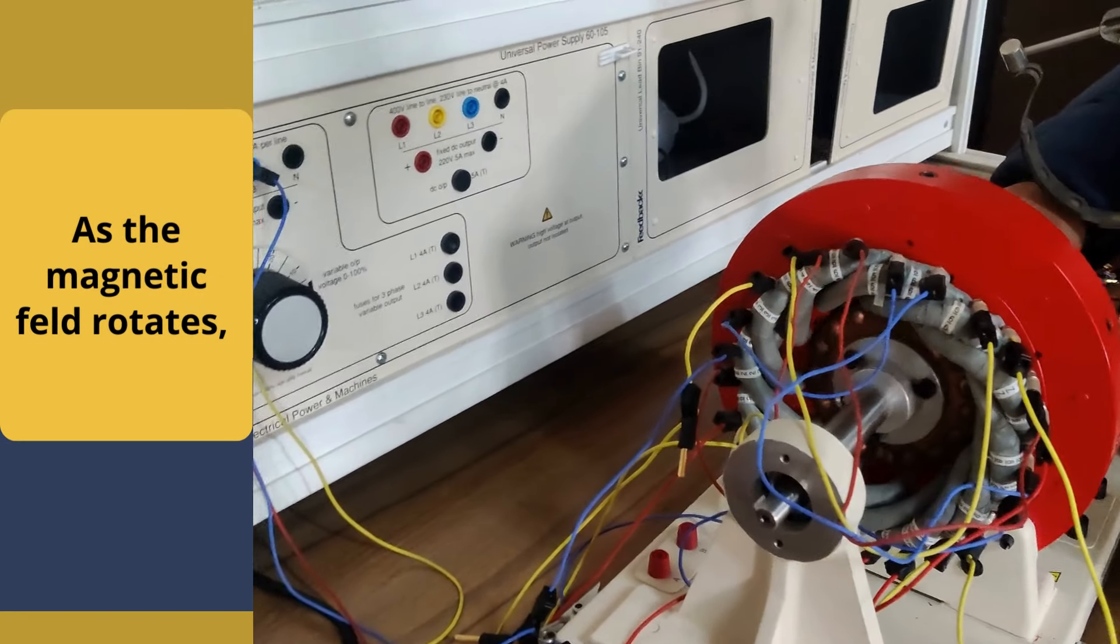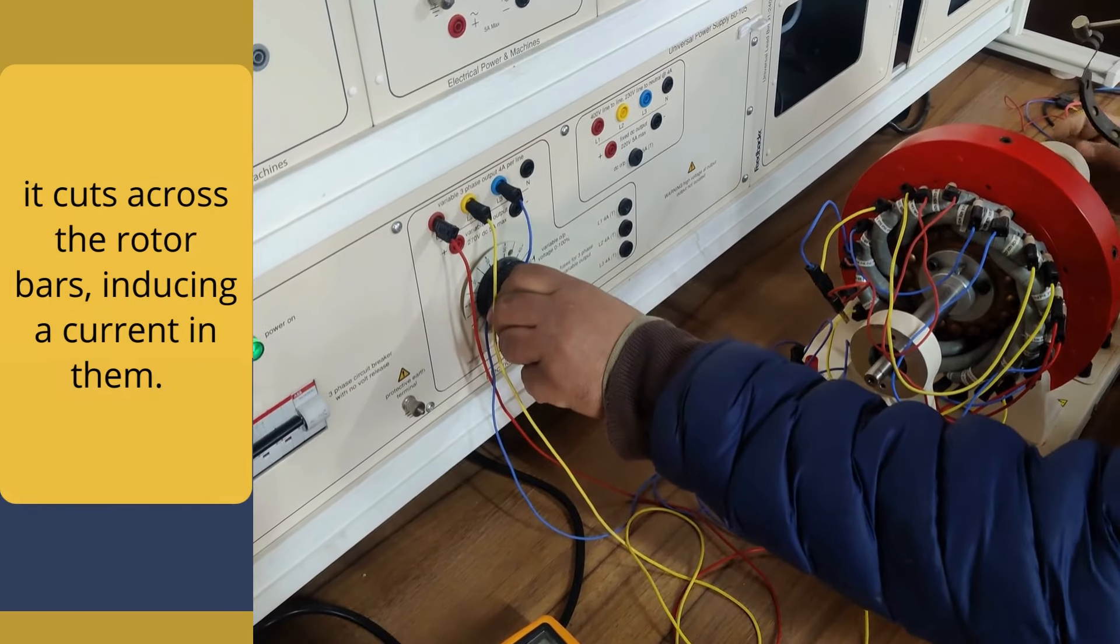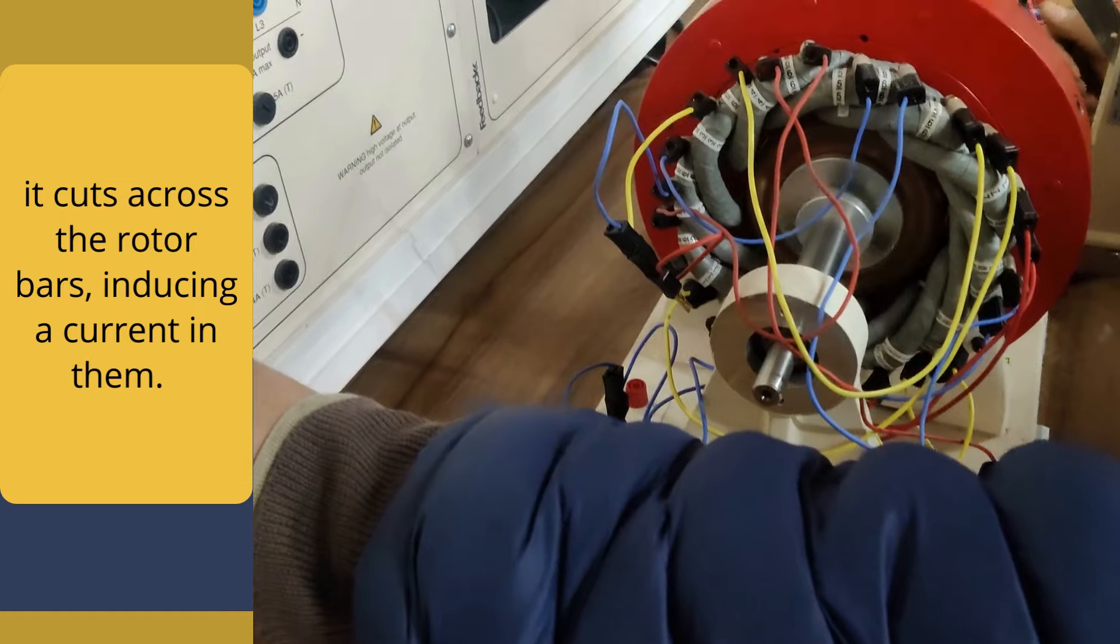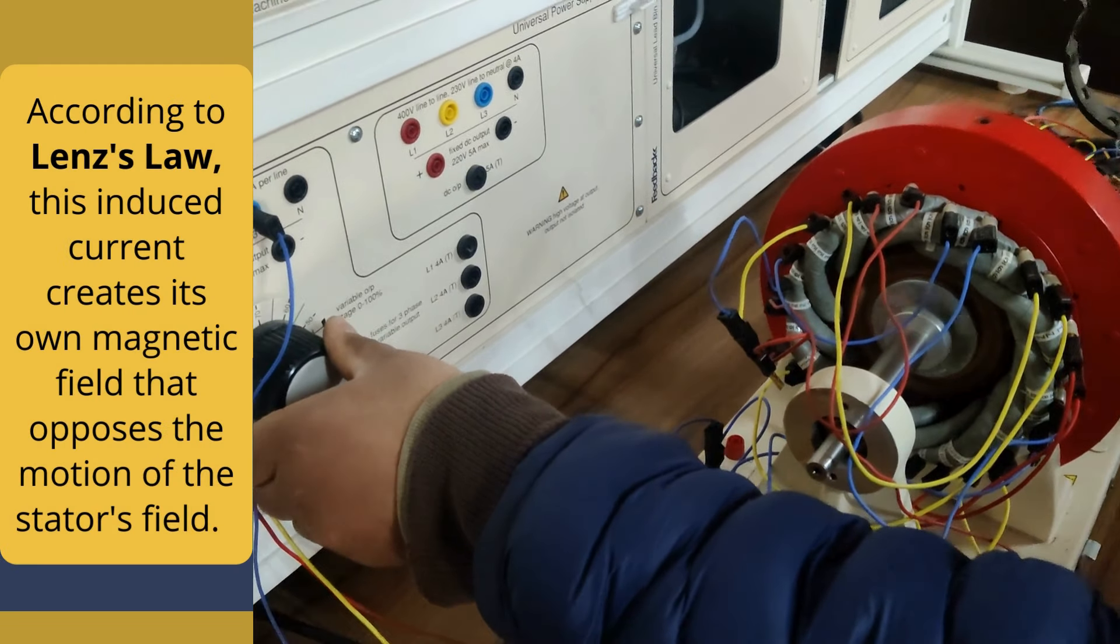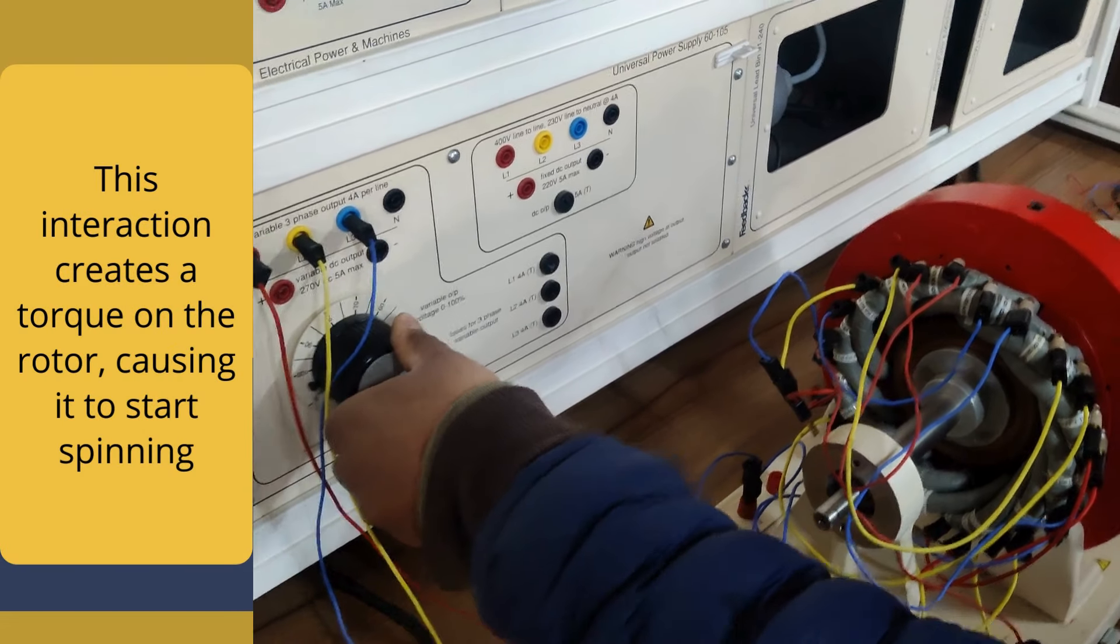Now you might wonder how the rotor actually starts turning. As the magnetic field rotates, it cuts across the rotor bars, inducing a current in them. According to Lenz's law, this induced current creates its own magnetic field that opposes the motion of the stator field. This interaction creates a torque on the rotor, causing it to start spinning.